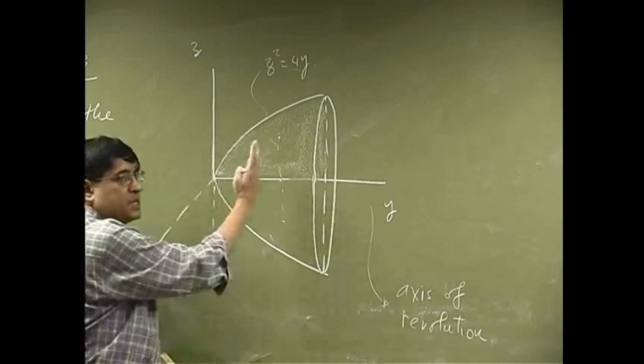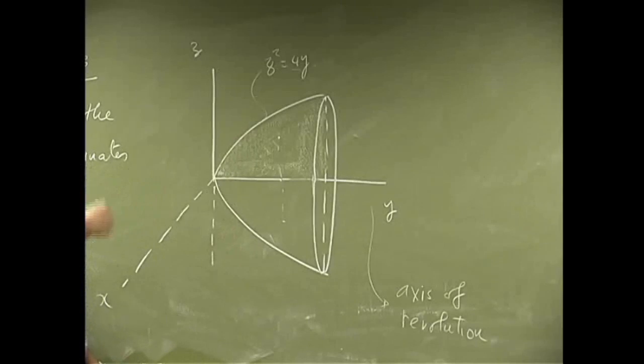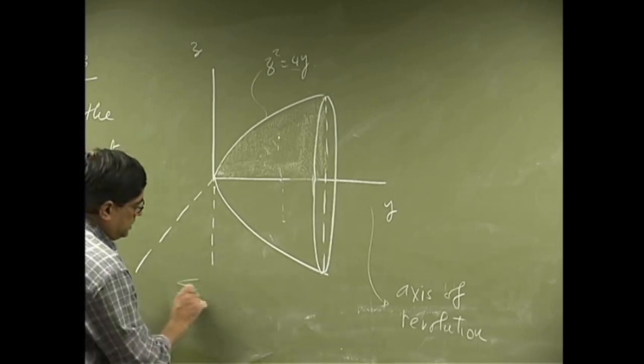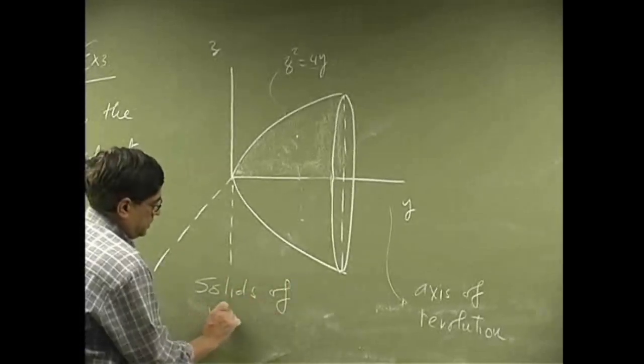And when you pass the section along the y-axis, then the cross section is going to look like a circle. So, these solids are known as solids of revolution.